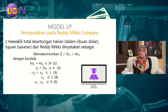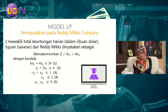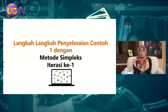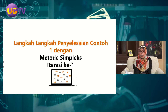Fungsi kendala ketiga diperoleh dari informasi tambahan bahwa selisih antara cat eksterior dan interior tidak lebih dari 1 ton. Fungsi kendala keempat bahwa cat interior tidak melebihi 2 ton, sehingga ditulis X2 ≤ 2. Karena X1 dan X2 menyatakan jumlah produksi yang tidak mungkin negatif, ditambahkan syarat X1, X2 ≥ 0. Sebenarnya masalah ini bisa diselesaikan dengan metode grafik, tapi karena kita sedang membahas metode simplex, maka kita gunakan metode simplex yang lebih umum dan tidak perlu memperhatikan jumlah variabel.